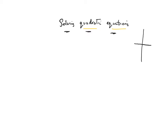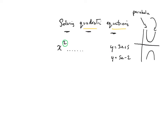First of all, let's think about what a quadratic is. A quadratic, when it's graphed, has got a parabolic shape — we call that a parabola. It can be concave up (U-shaped) or concave down (upside-down U-shaped). The parabolic shape arises when we've got expressions with x² in them. When you've got an expression like y = 3x + 5 or y = 5x − 2, you get straight lines, but when you introduce the x² term, it creates this parabolic shape — and we call that a quadratic expression.